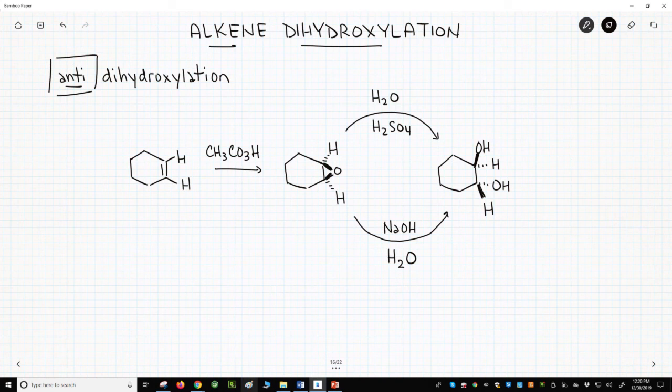The first step from the alkene is an epoxidation with a peroxide. The second step is ring opening of the epoxide.